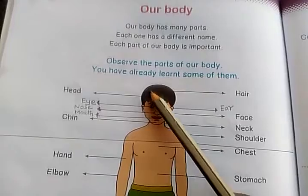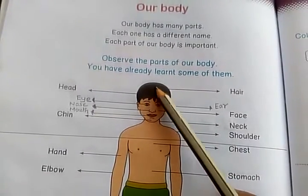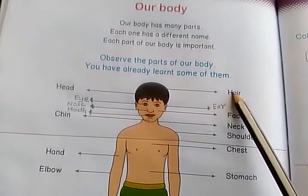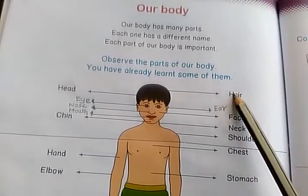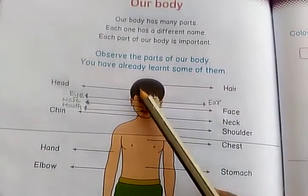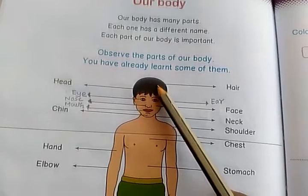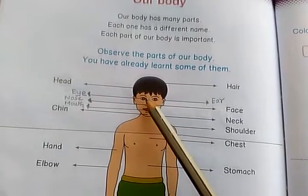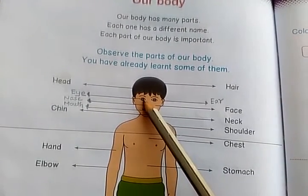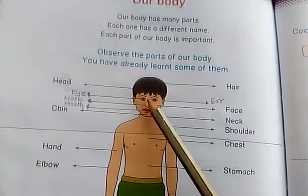Outside of the head, we have hair. It is black color. Then what is this? This is eye. We have two eyes.